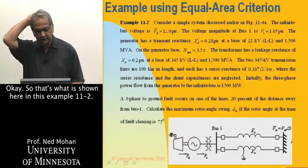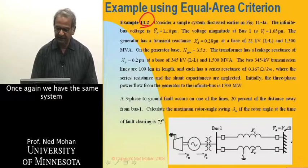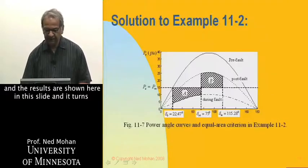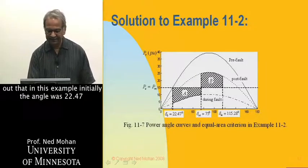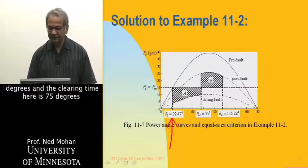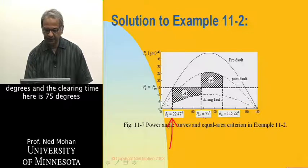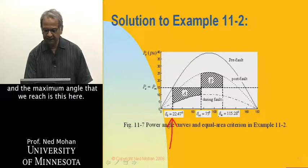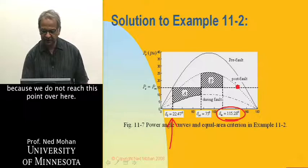Example 11-2 uses the same system. The results show that the initial angle was 22.47 degrees and the clearing time corresponds to 75 degrees. The maximum angle reached stays below delta_max, confirming the system is stable.